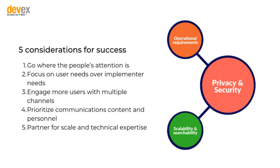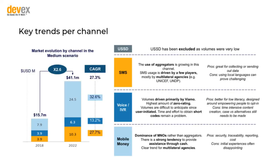These are some considerations, and we have some more data here about key trends per channel. I would highly recommend going and looking at the two reports — they're not super long but are full of information that puts things into context. For example, if you look at voice IVR, Viamo is in 22 countries. So if you're a smaller NGO, or even one working in multiple countries, you may want to partner with somebody like Viamo who is already in 22 or so countries, has the connectivity in place, and has experience running campaigns.